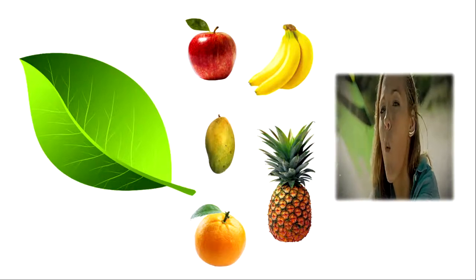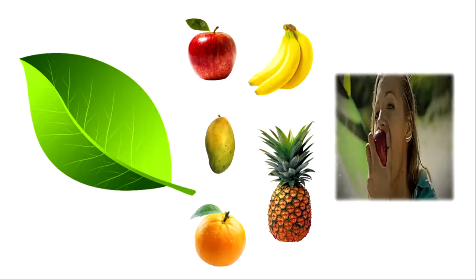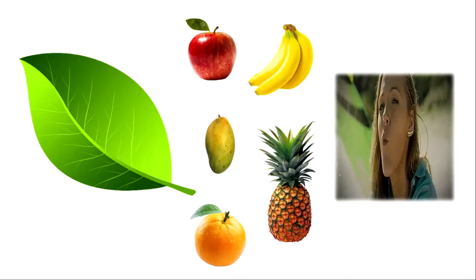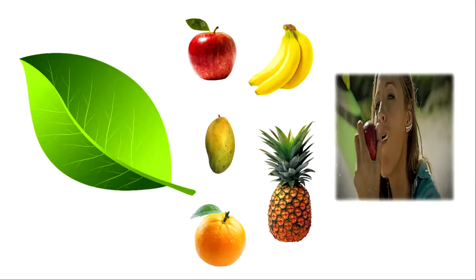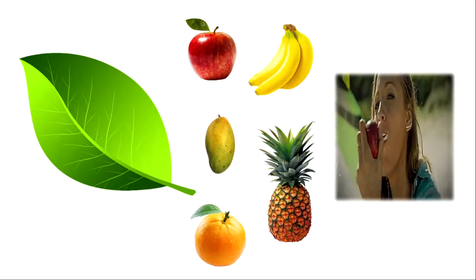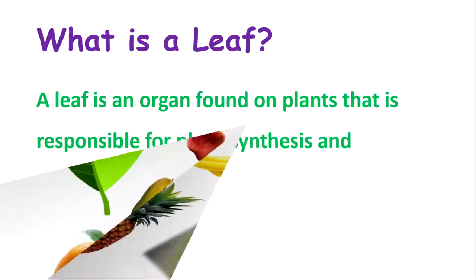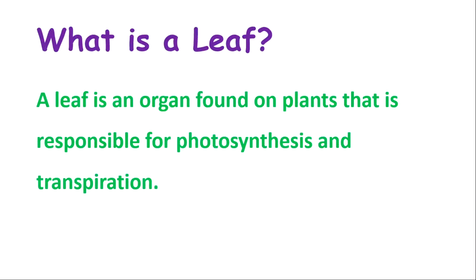So today we are going to talk about the leaf — these thin structures, but yet so powerful for the sustenance of life. Without them, we will not be able to survive. Now let's look at what is a leaf. A leaf is an organ found on plants that is responsible for photosynthesis and transpiration.